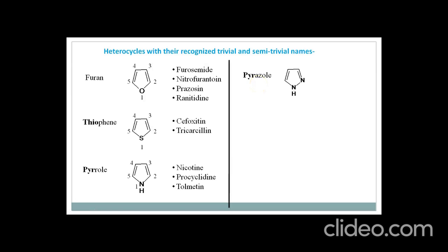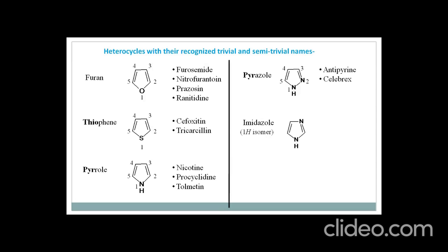Here is the structure, and we start the numbering from the nitrogen that contains the hydrogen. So number 1 starts from this nitrogen, and the second number goes to the second nitrogen. The example of drugs is Antipyrin and Celebrex — Antipyrin is an example of a non-steroidal anti-inflammatory drug. Next one is imidazole, which indicates a 5-membered ring with 2 nitrogens, but these 2 nitrogens are at the 1,3 positions relative to each other.